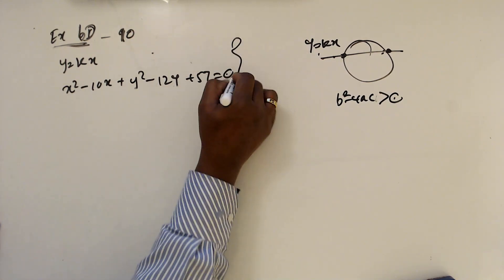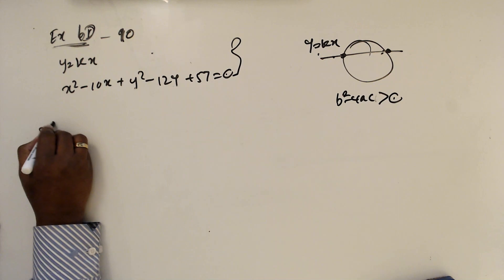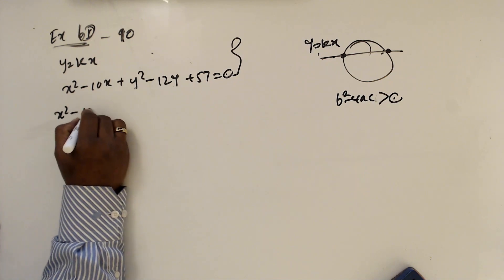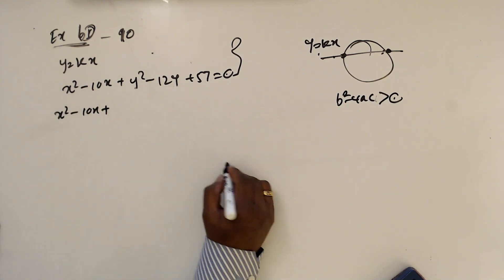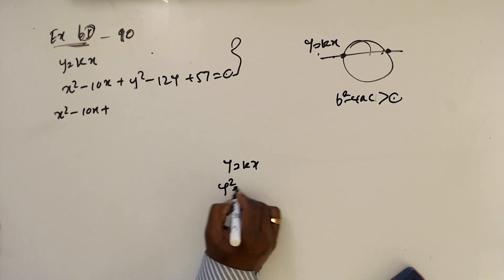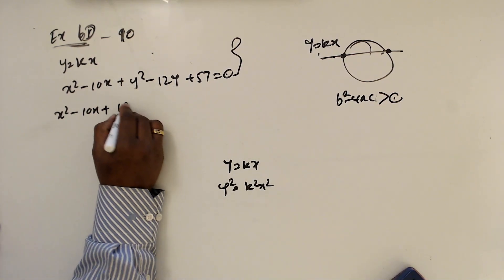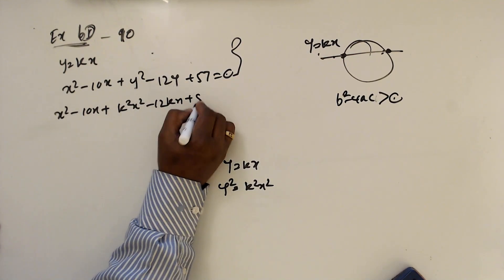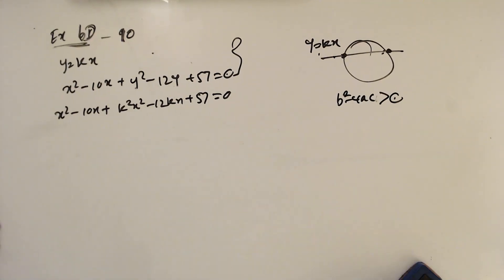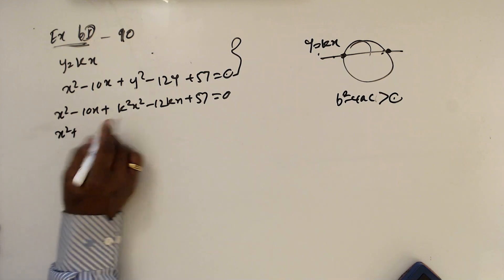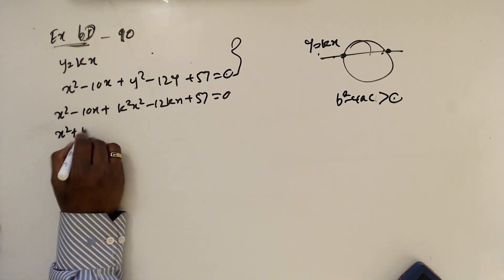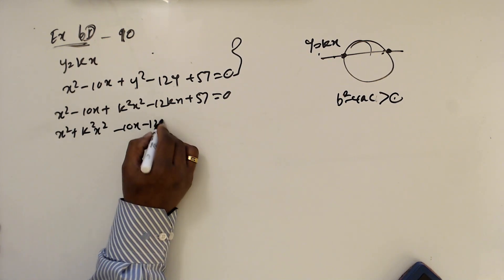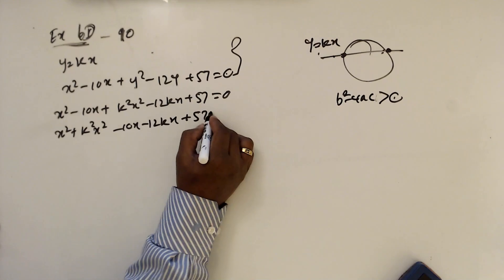I am going to solve those two equations. x² minus 10x, and y = kx means y² = k²x². Substituting and bringing x² terms together: k²x² minus 10x minus 12kx plus 57 equals 0.